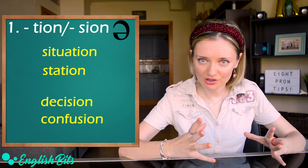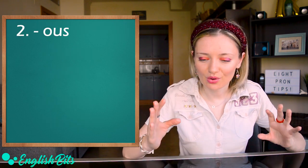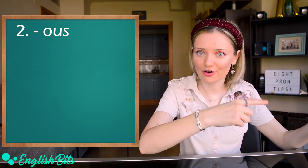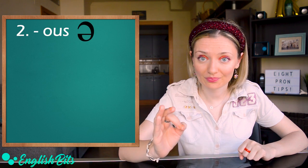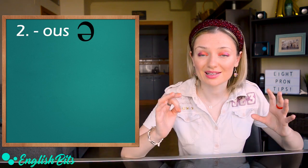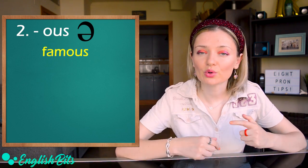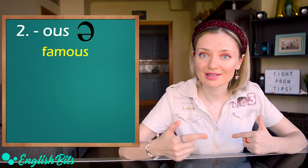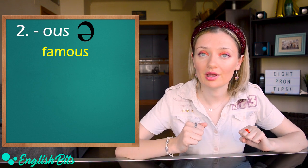Let's move on to the second tip, which is the pronunciation of the ending o-u-s. So here we've got the same situation as in the first tip and it's the sound schwa. Let's look at some examples. The first one. Famous. So we don't say famous. We don't pronounce the sound o, but the schwa sound. Famous.